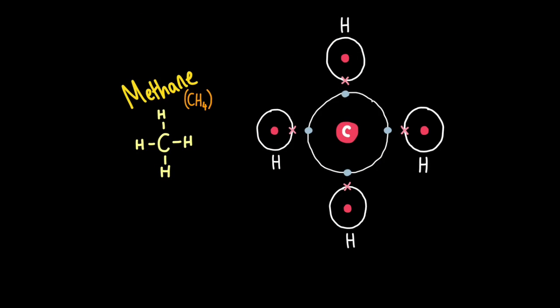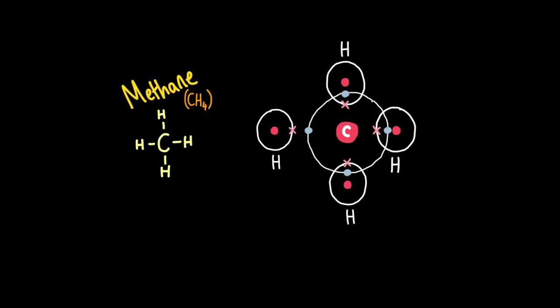Next, we have methane, CH4. Carbon has four electrons on its outer shell, therefore needs four more, so it needs to share four pairs of electrons. This is how it does it with hydrogen: one pair, two pairs, three pairs, four pairs. Every hydrogen atom now shares one pair of electrons and has two electrons in its outer shell — they're all complete. Carbon now has eight electrons in its outer shell. You can also represent it as carbon sharing four single bonds with hydrogen.